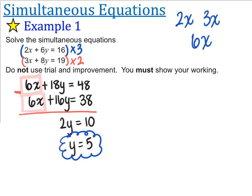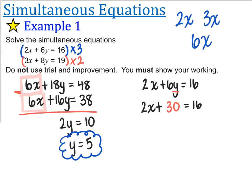Now that I've found that, I can choose any of the equations. I think the first equation from the original start of the question is the best one. That is 2x plus 6y is equal to 16. But we also just found out that y is equal to 5, so that means 6 times by 5, that is 30. The 2x stays exactly as it is, so 2x plus 30 is equal to 16. I can subtract 30 from both sides, so I'm left with 2x is equal to 16 take away 30, which is minus 14.